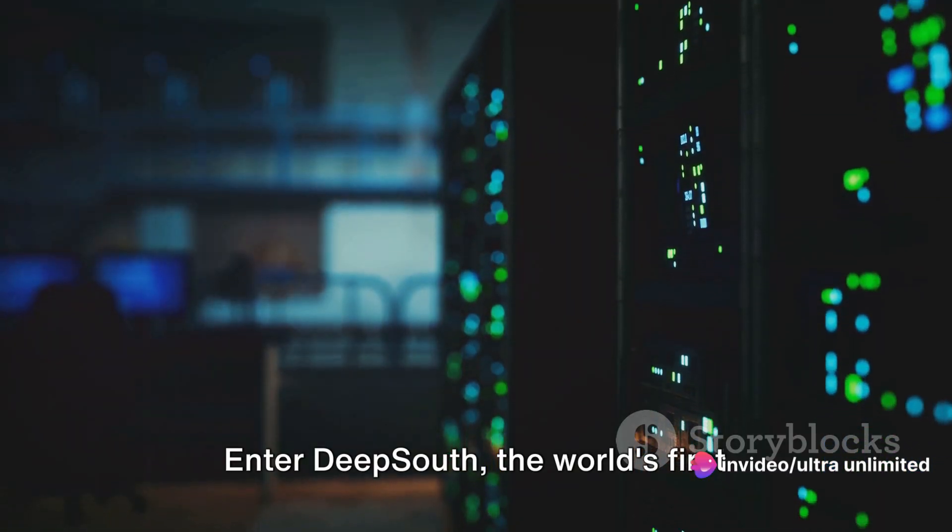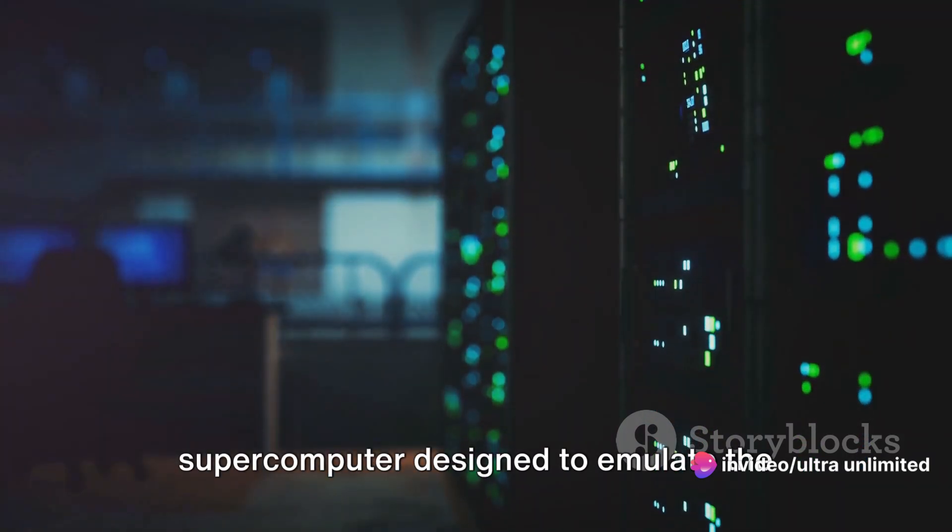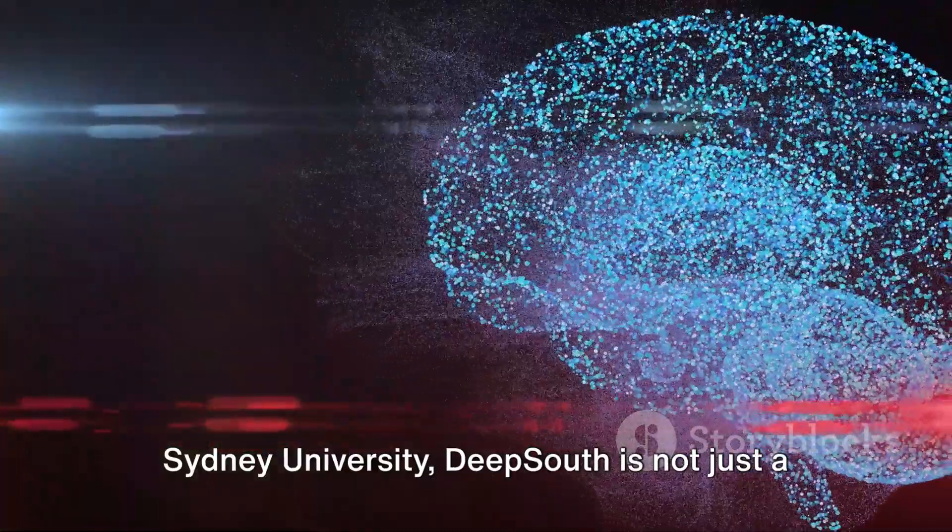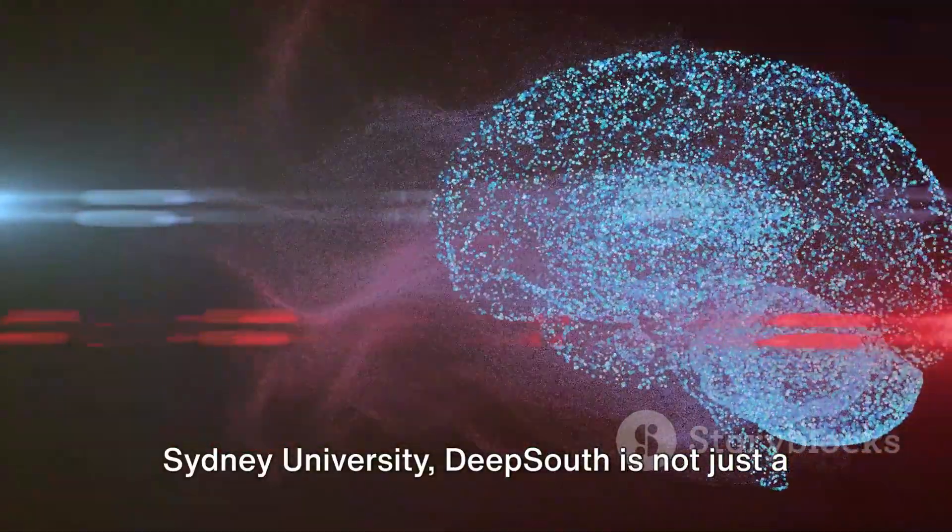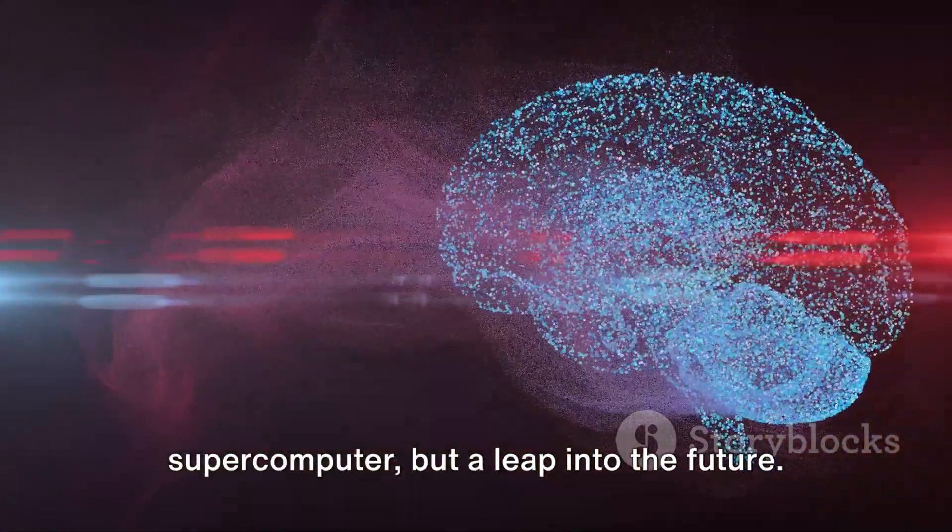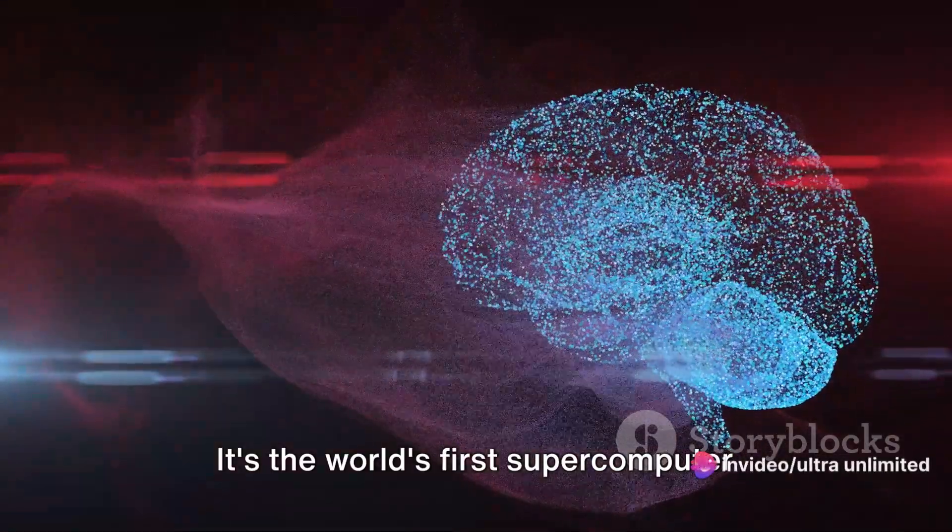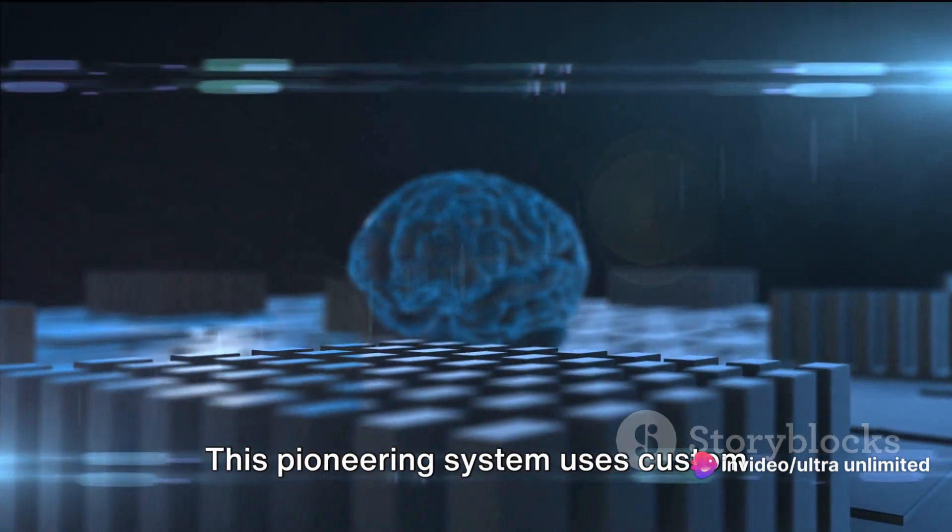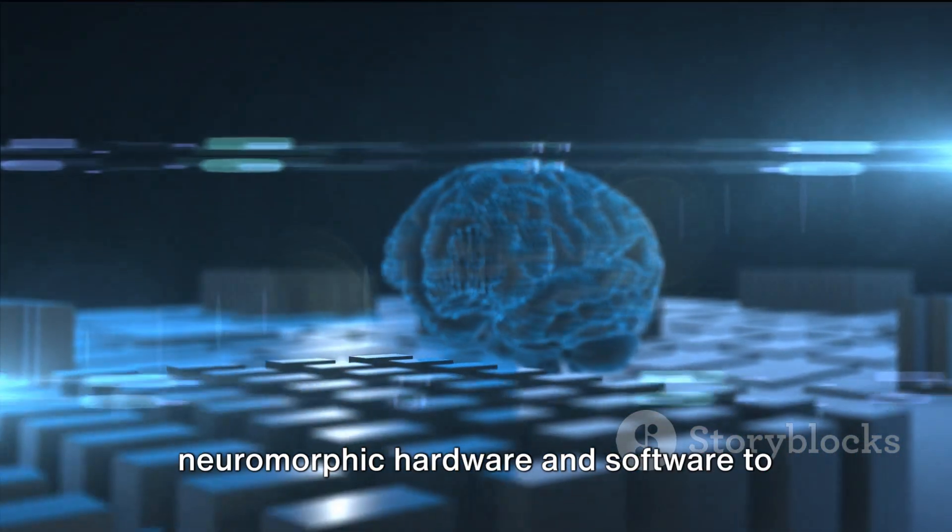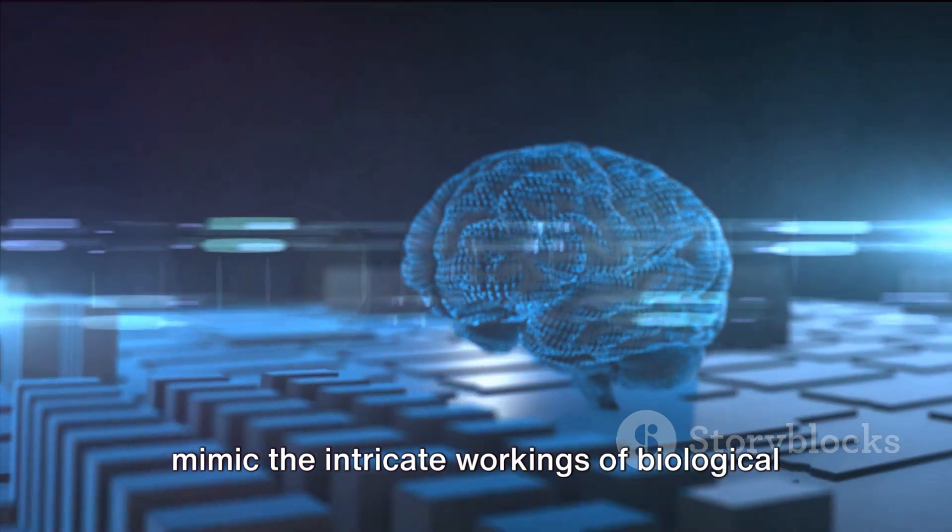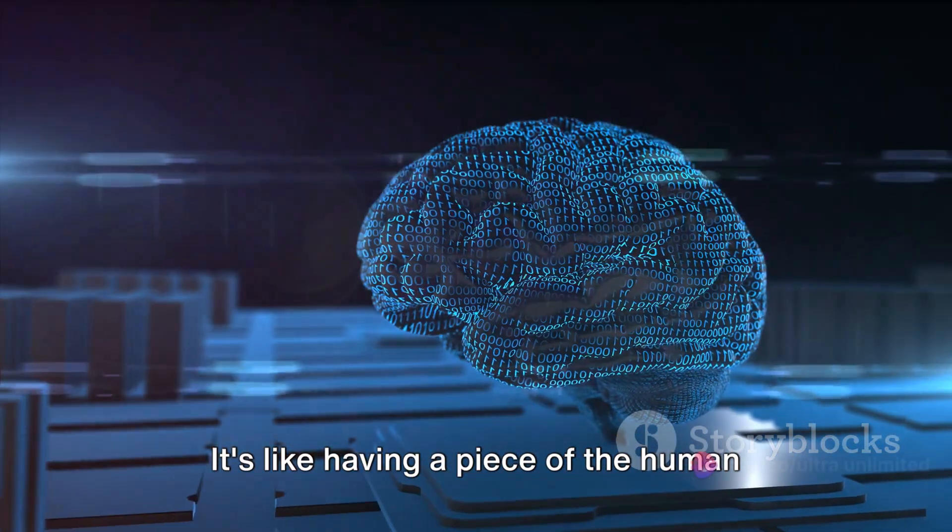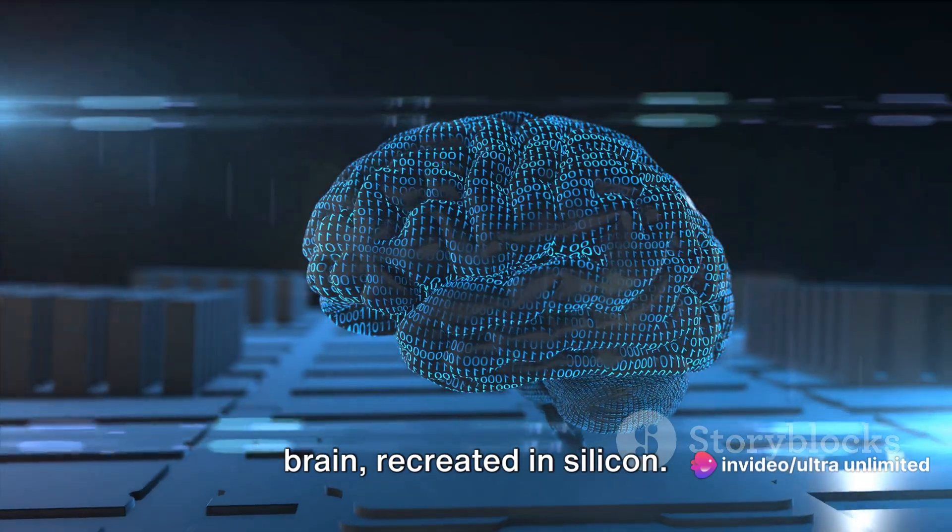Enter Deep South, the world's first supercomputer designed to emulate the human brain. Developed by the scientists at Western Sydney University, Deep South is not just a supercomputer but a leap into the future. It's the world's first supercomputer specifically designed to mirror the parallel networks of the human brain. It's like having a piece of the human brain, recreated in silicon.